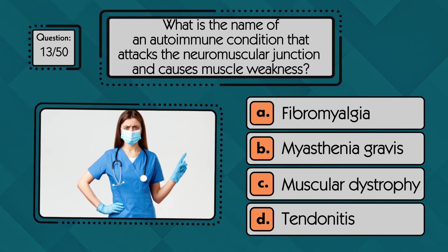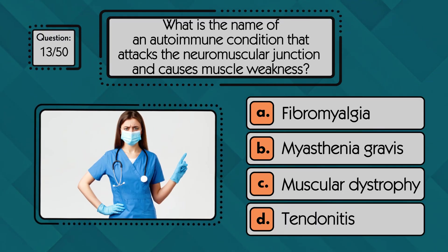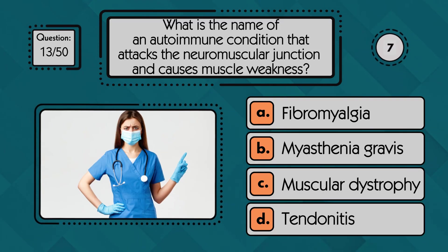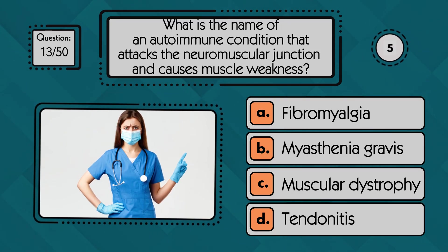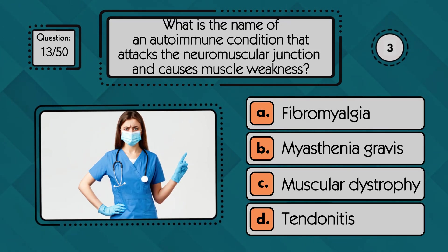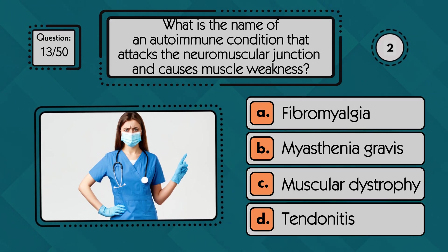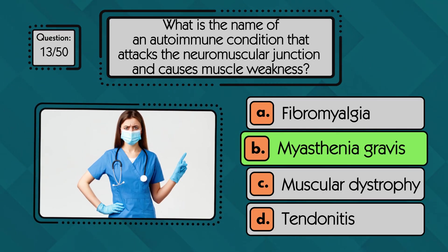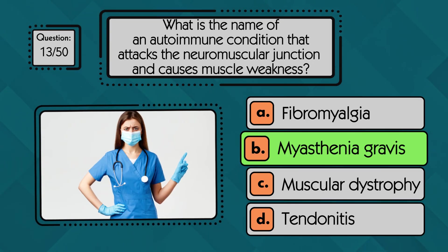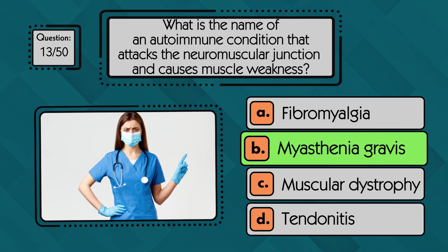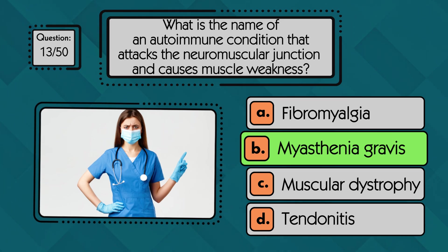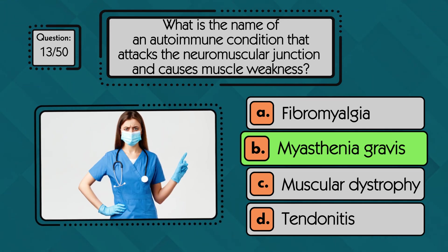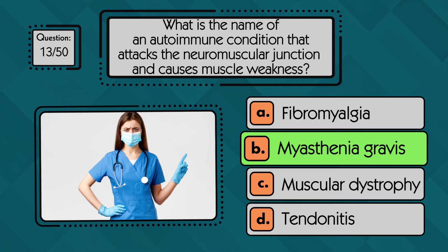What is the name of an autoimmune condition that attacks the neuromuscular junction and causes muscle weakness? Myasthenia gravis is an autoimmune disorder where antibodies attack the receptors at the neuromuscular junction, preventing nerves from properly triggering muscle contractions and causing weakness that worsens with activity.